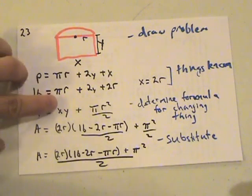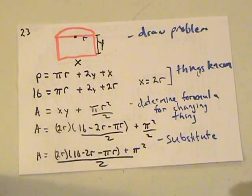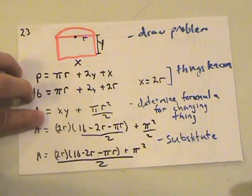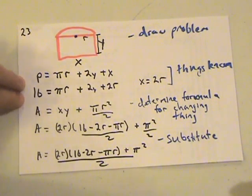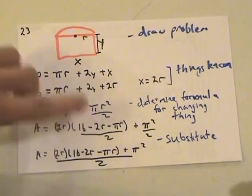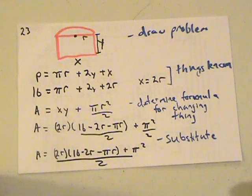So the area is x times y and then plus pi r squared over half, because it's only a semi-circle. And then we begin to plug in other stuff. We know x is 2r. And then we can figure out that y is 16 minus 2r minus pi r over 2. And then we add the end. And now it's just beginning to substitute and simplify everything in there so that we have a smaller function.